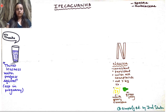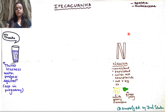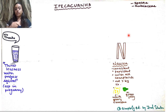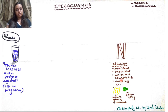N stands for nausea. All complaints are associated with nausea — there is constant, consistent, persistent nausea with all complaints. The keynote is that nausea is not better by vomiting. Vomiting could either be white, glairy with mucus, or it could be green jelly-like. These are the two types of vomiting seen in this drug.